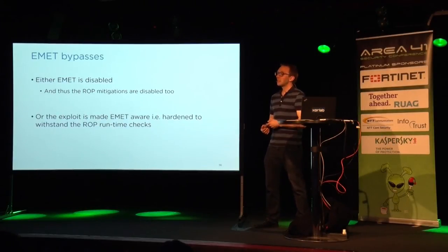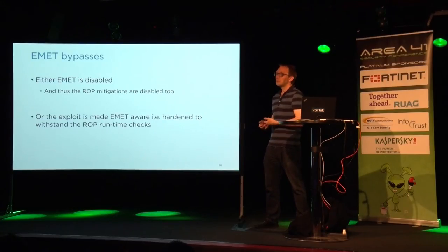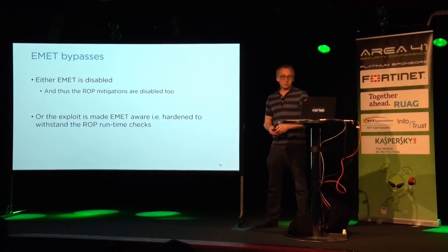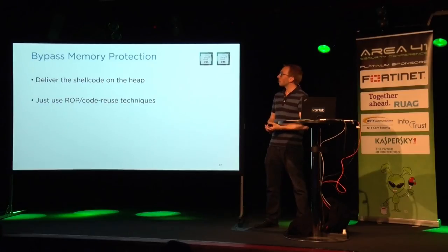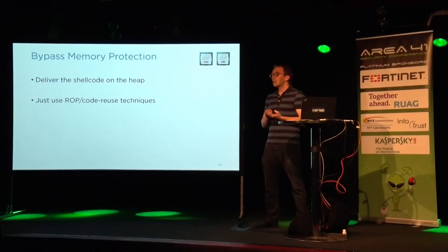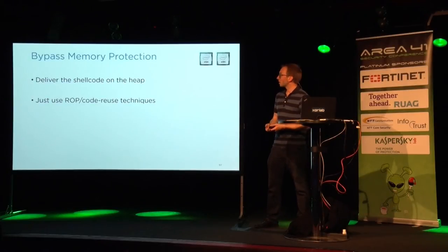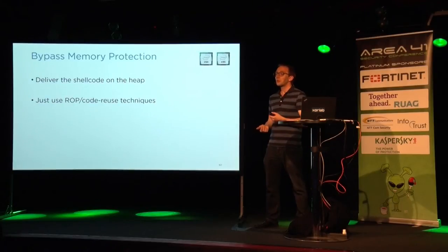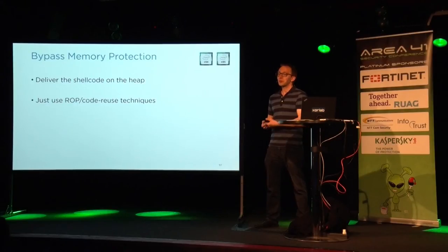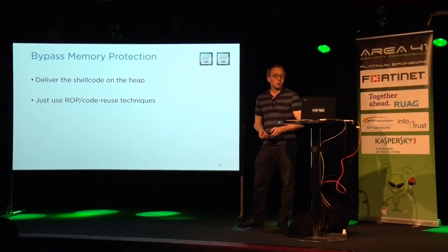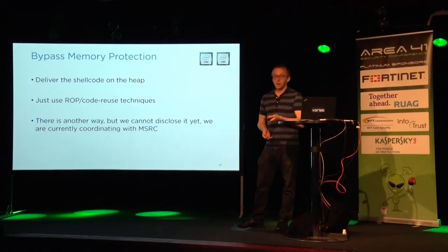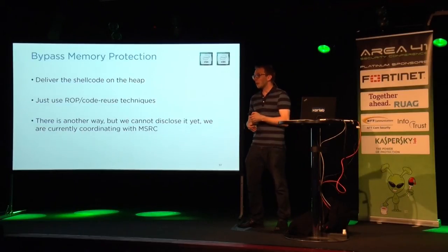The other option is to harden your exploit and make it EMET-aware so it withstands the runtime checks. How do we bypass EMET memory protection? Since it prevents marking the stack executable, we just deliver the shellcode on the heap instead of the stack, or we use return-oriented programming and code reuse attacks without relying on marking any memory as executable. We also found another way, but we can't discuss it yet as we're still discussing it with Microsoft — come by after the talk.